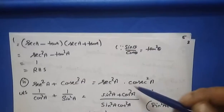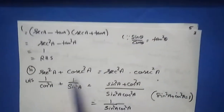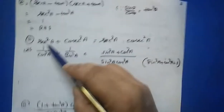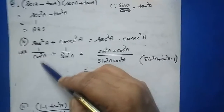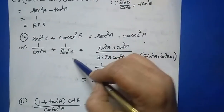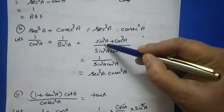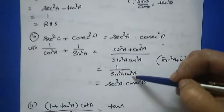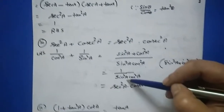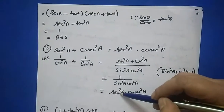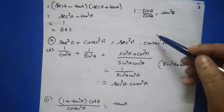Question ten: sec²a + cosec²a = sec²a·cosec²a. Change sec²a to 1/cos²a and cosec²a to 1/sin²a. Take LCM; you know sin²a + cos²a = 1, so you get 1/(sin²a·cos²a). Now 1/sin²a = cosec²a and 1/cos²a = sec²a, giving sec²a·cosec²a, which is the right hand side.